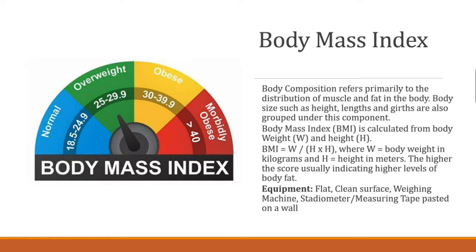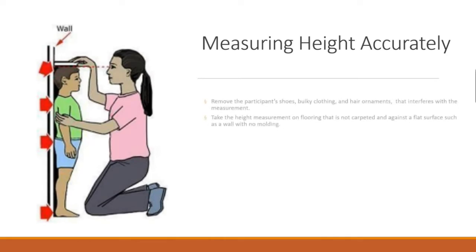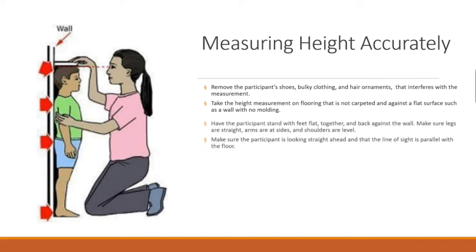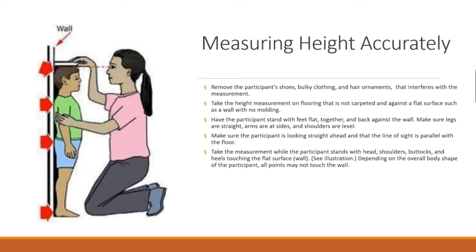Measuring Height Accurately: Remove the participant's shoes, bulky clothing, and hair ornaments that interfere with the measurement. Take the height measurement on flooring that is not carpeted and against a flat surface such as a wall with no molding. Have the participant stand with feet flat, together, and back against the wall. Make sure legs are straight, arms are at sides, and shoulders are level. Make sure the participant is looking straight ahead and that the line of sight is parallel with the floor. Take the measurement while the participant stands with head, shoulders, buttocks, and heels touching the flat surface.